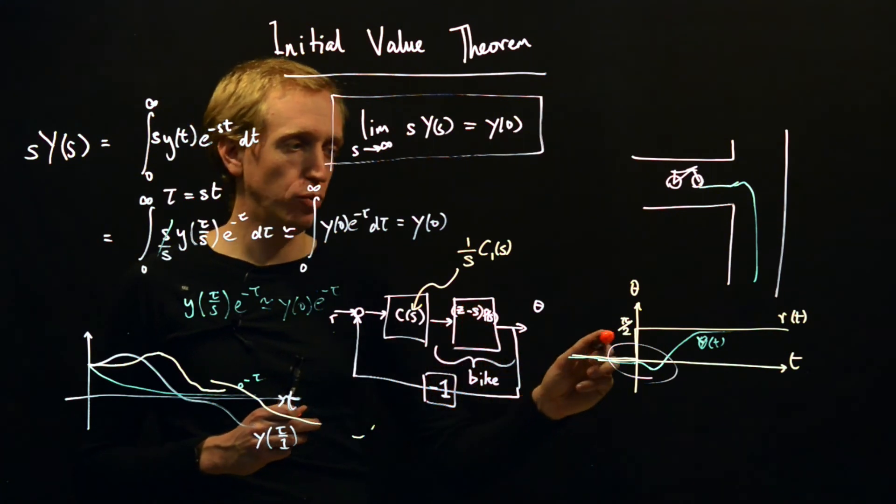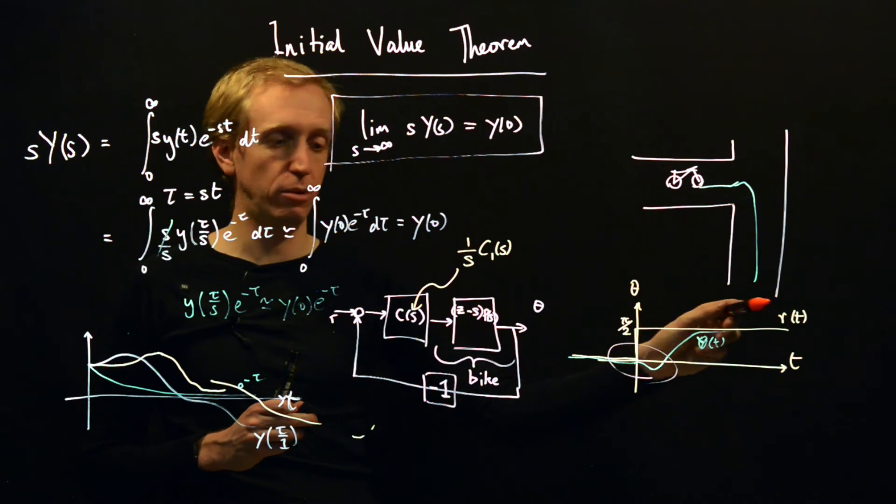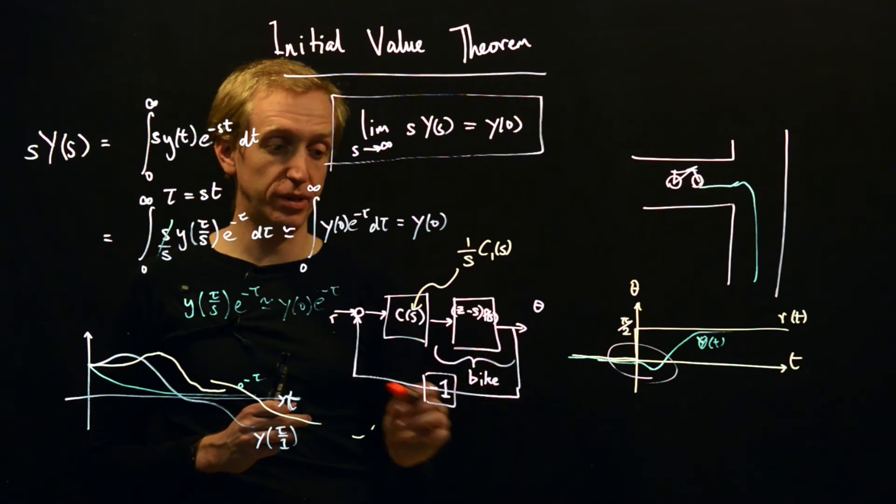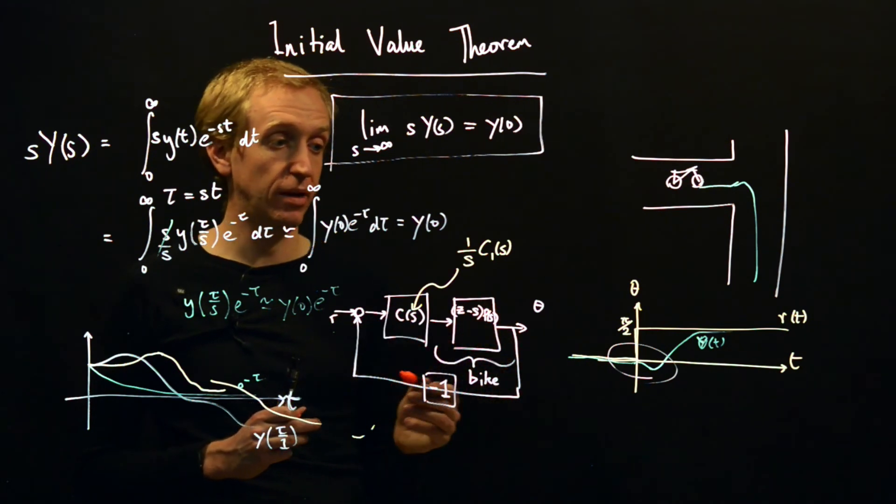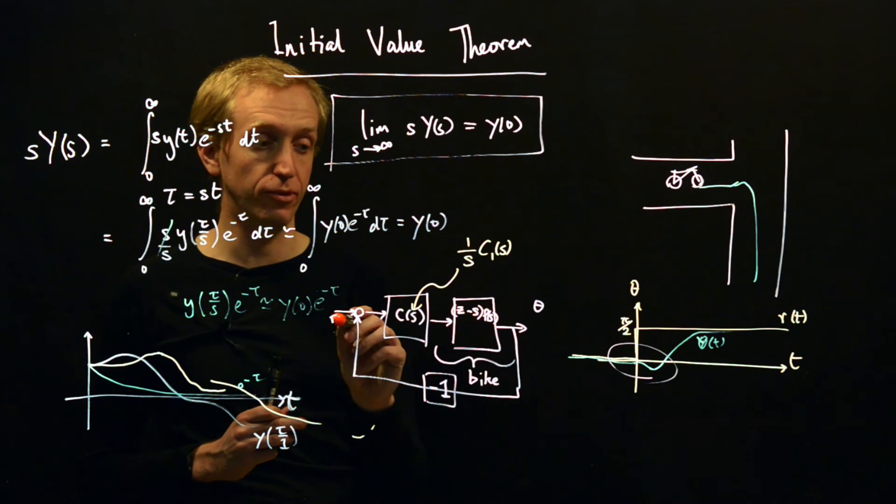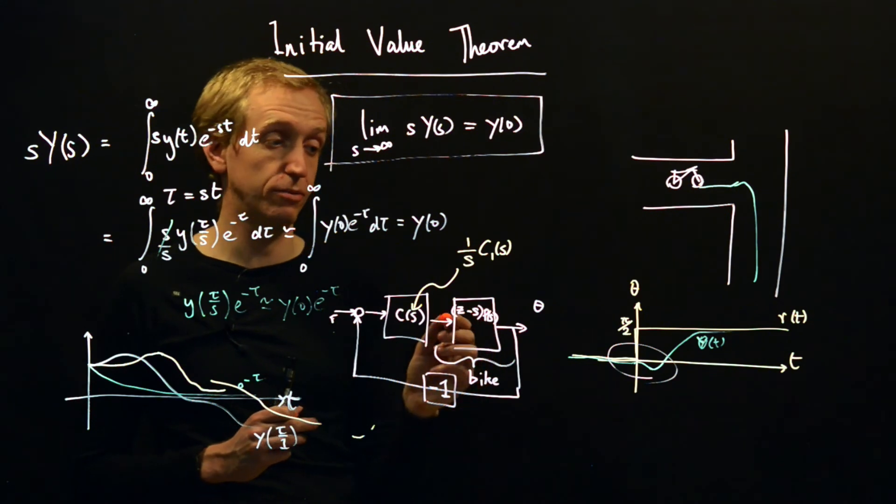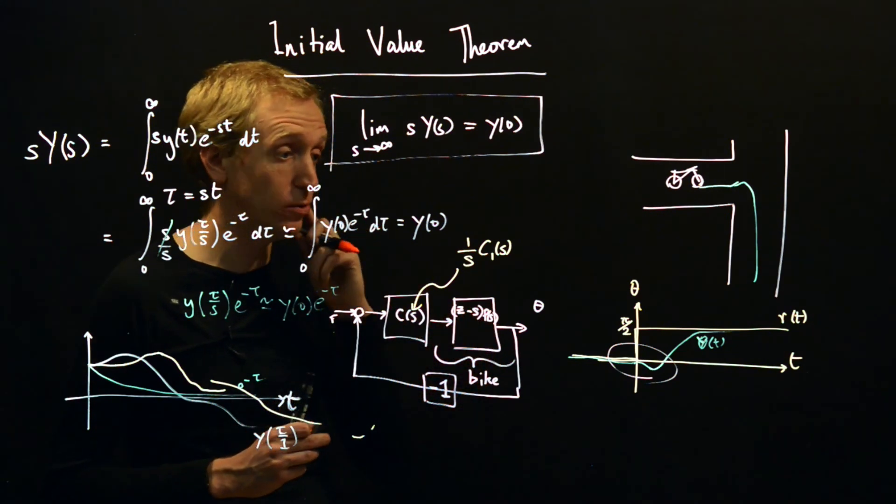And now using the initial value theorem, show that provided you have such a controller, you will always initially go the wrong way before going the right way. So we're putting in a reference signal as a step. We can find out what this transfer function is here and the transfer function from r to θ is. And just by having a z - s in the numerator of the plant transfer function, it'll be enough to show that we're going the wrong way.